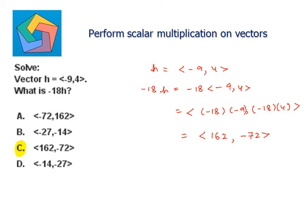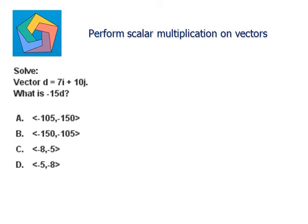Next problem: solve vector d equals 7i plus 10j. What is negative 15d?